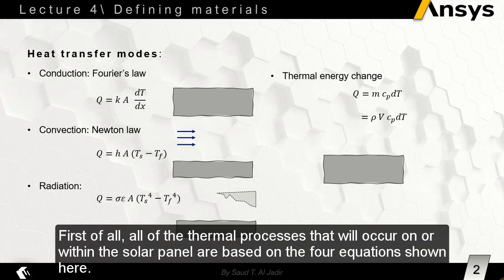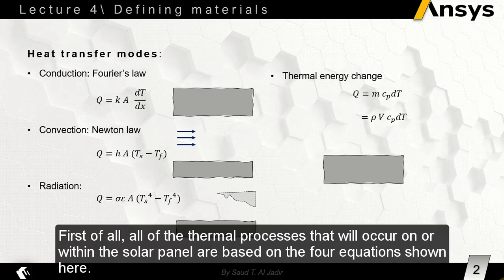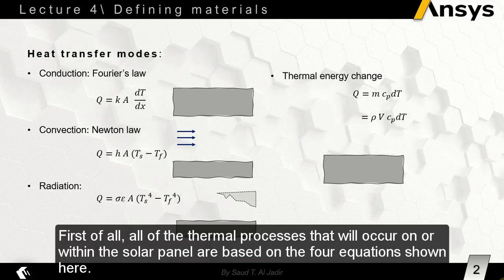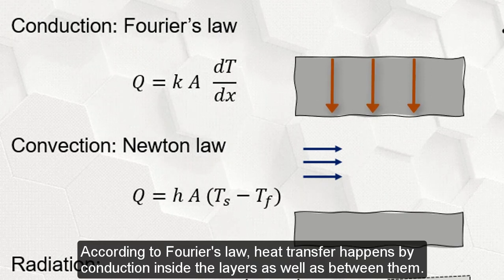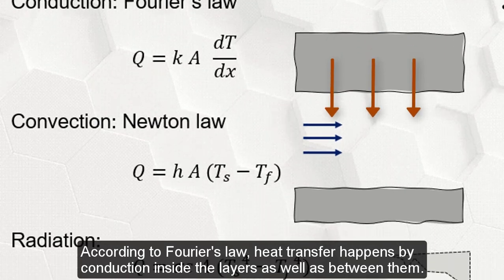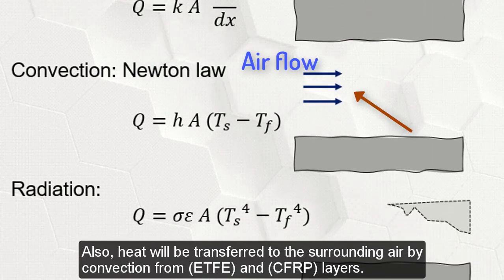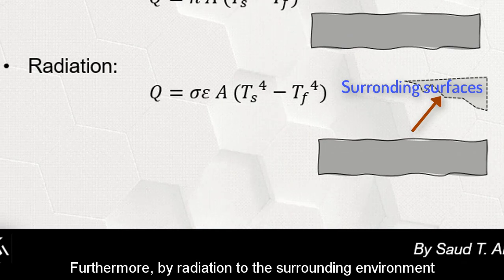First of all, all of the thermal processes that will occur on or within the solar panel are based on the four equations shown here. According to Fourier's law, heat transfer happens by conduction inside the layers as well as between them. Also, heat will be transferred to the surrounding air by convection from ETFE and CFRP layers. Furthermore, by radiation to the surrounding environment.